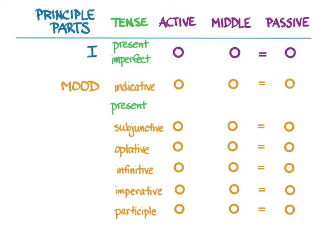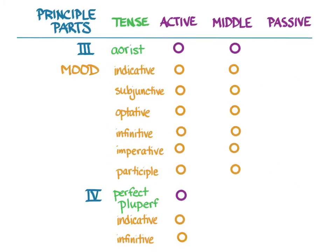For everything from the first principle part, we've already covered the indicative of the present and imperfect, and now we're going to cover the subjunctive and the optative of the present. For the things from the third principle part, this video will cover the subjunctive and the optative of the aorist.